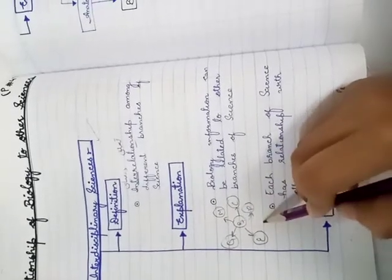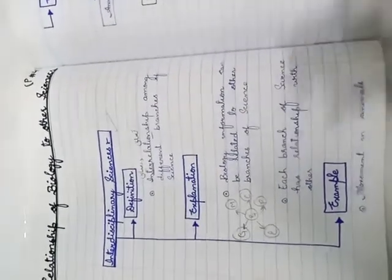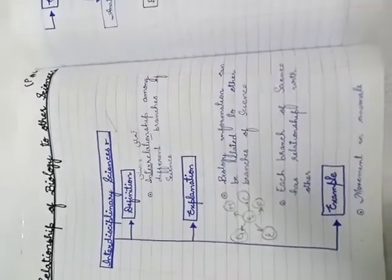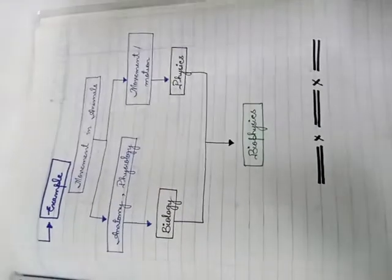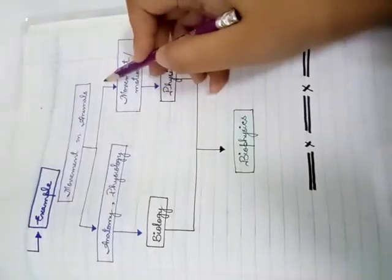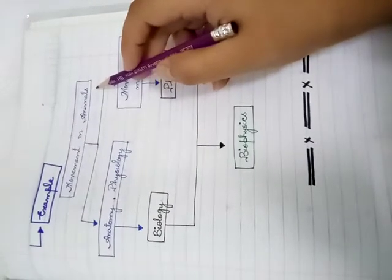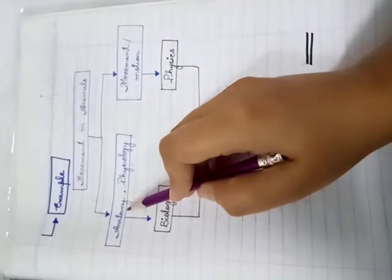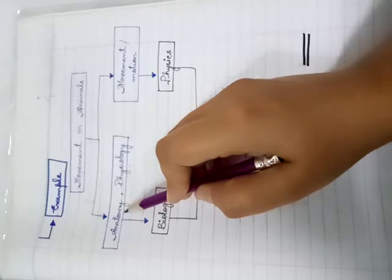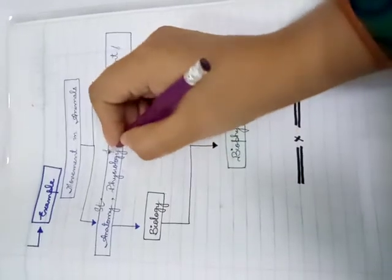For example, if you want to study movement in animals, you need to look at anatomy, which is the study of structure, and physiology, which is the study of function. So studying movement in animals involves both structure and function.